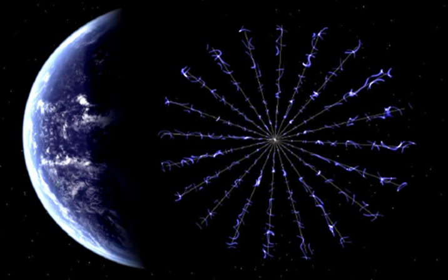An electric sail, also known as an electric solar wind sail or e-sail, is a proposed form of spacecraft propulsion using the dynamic pressure of the solar wind as a source of thrust.